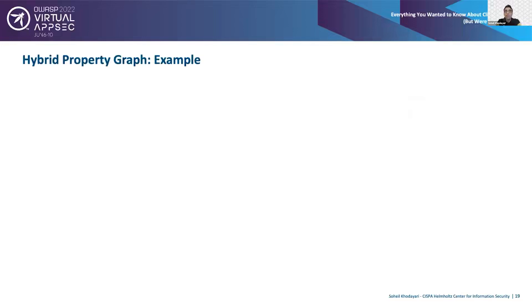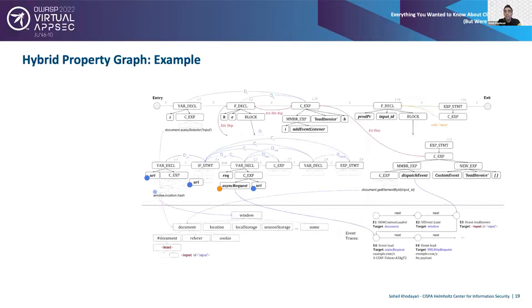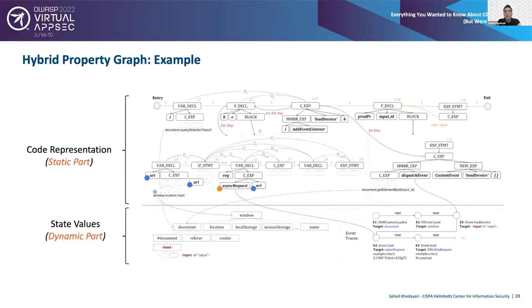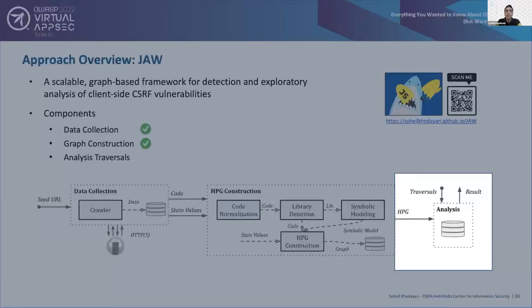Once we put all these models together, we have a graph with a static part representing the code, a dynamic part representing runtime information, and edges connecting the two. JAW imports this HPG into a graph database — specifically Neo4j — and then we declaratively traverse this graph using the Cypher query language to explore vulnerable program behaviors and detect client-side CSRF.